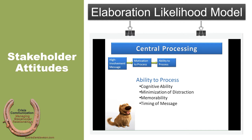There's also the minimization of distraction. Our environment can make us unable to process information effectively. We have campaigns about texting while driving — that alcohol, texting, and all the things that take our concentration away from the road minimize our ability to process information. Likewise, with a campaign, a high involvement message means you have to be able to concentrate on it — you have to be in a place and mindset where it makes sense. The message can't just be dull; it has to be memorable, relatable, understandable, and well-timed.